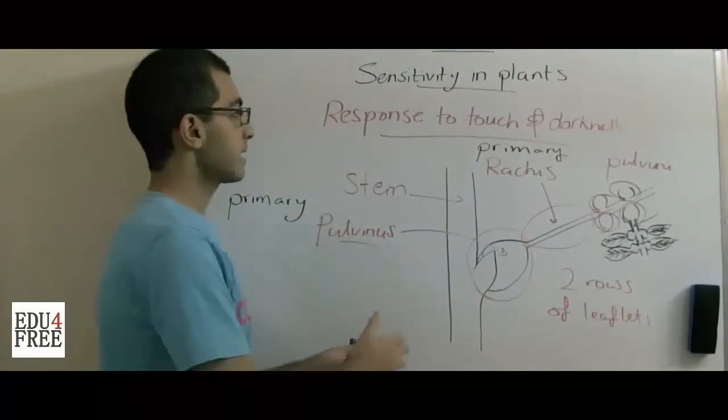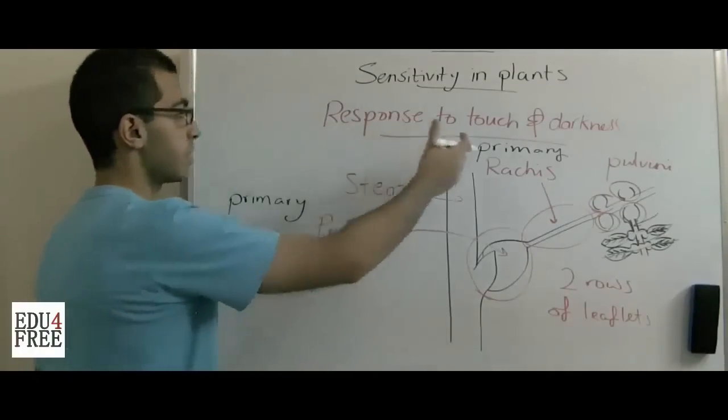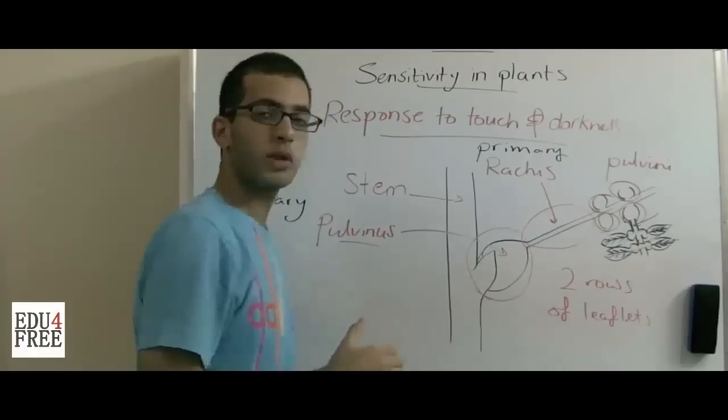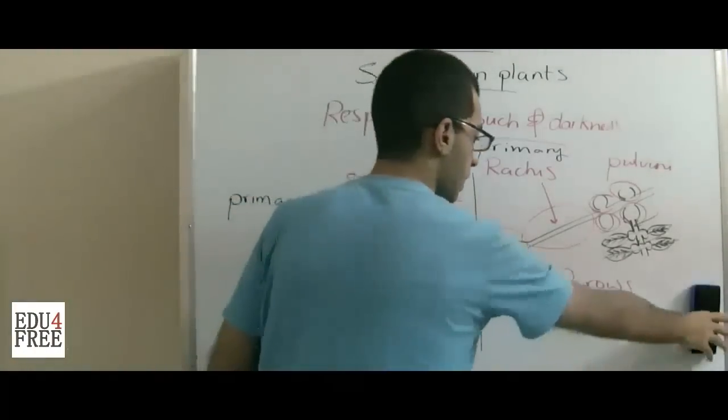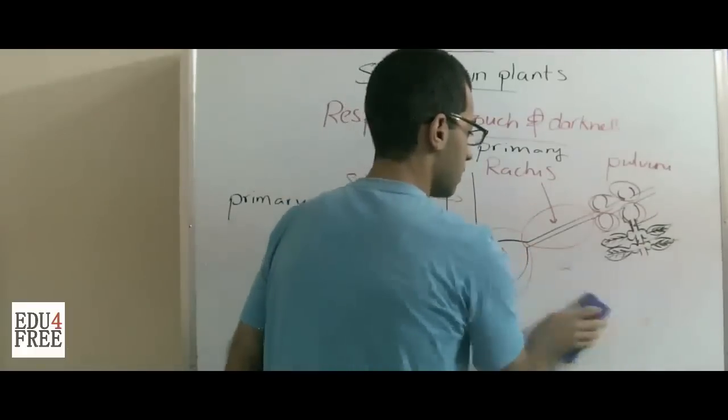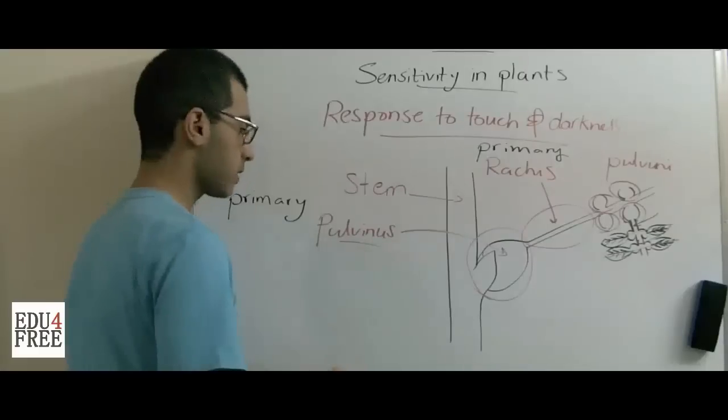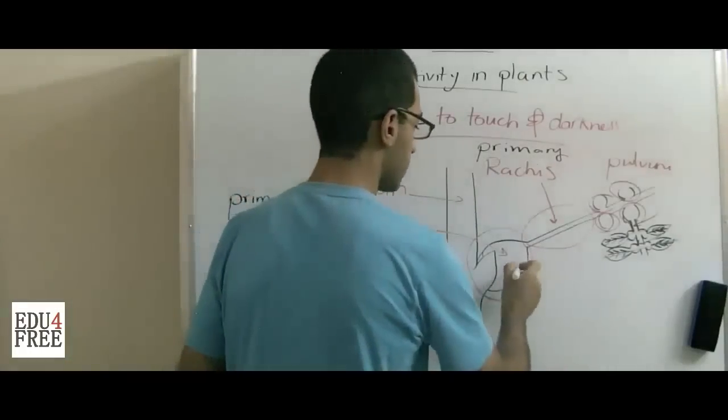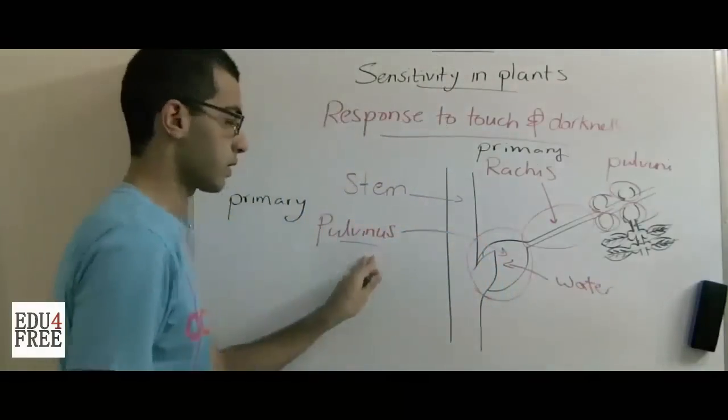How is the Mimosa affected by touch or darkness? Or in other words, how does it react to touch and darkness? Here, the pulvinus has a content of water. There is water inside each pulvinus.